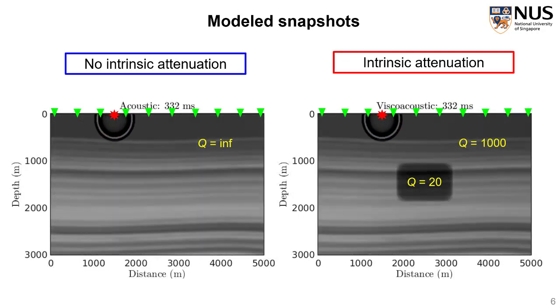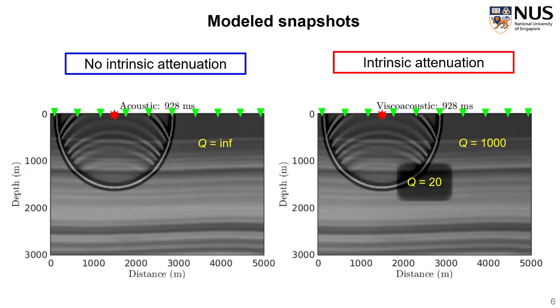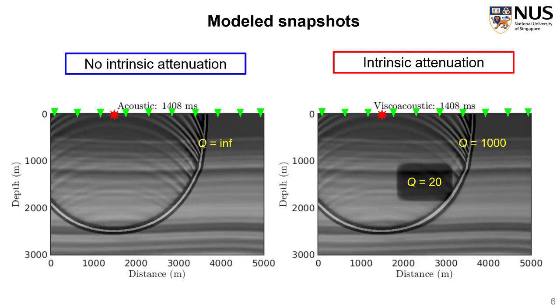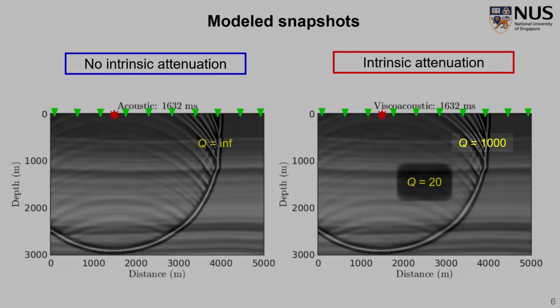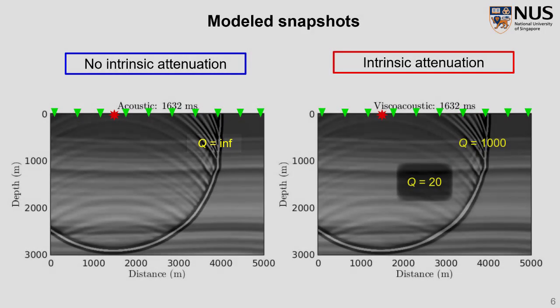You can see the red star indicating source and the green triangles are the receivers. The left-hand side is showing the non-attenuated case, while the right-hand side is showing the attenuation case. We can see for the background Q, which is 1000 in comparison with the non-attenuation case, which is infinity Q, there are basically no difference because it's nearly no attenuation. However, if we compare the wavefront that have traveled through the low Q anomaly, we can see very obvious difference.